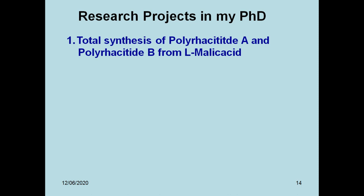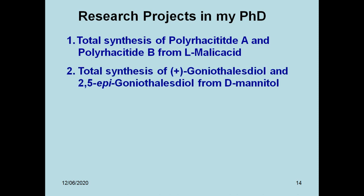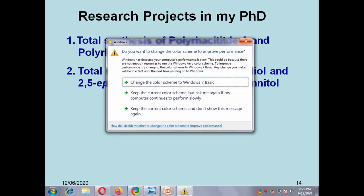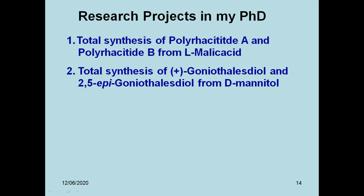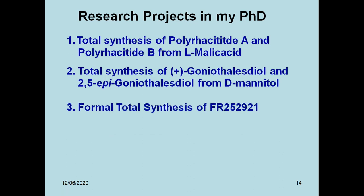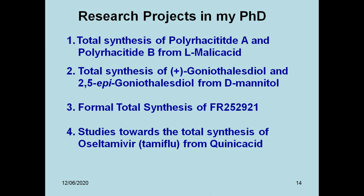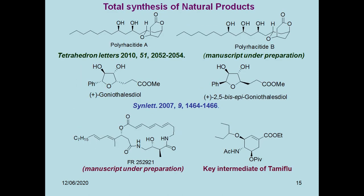Total synthesis of Polyhastate A and Polyhastate B from L-malic acid is Chapter 1. Total synthesis of Goniothalamol Diol and 2,5-AP Goniothalamol Diol from D-mannitol is Chapter 2. Formal total synthesis of FR-252921 is Chapter 3. Studies toward the total synthesis of Tamiflu from quinic acid is a project work.